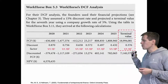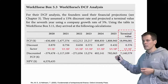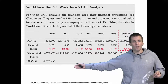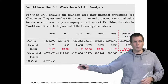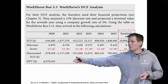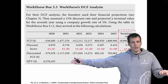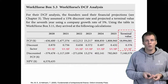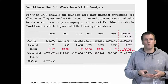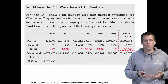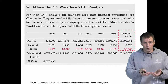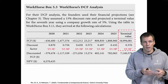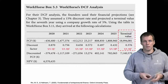We discount the terminal value, take the sum of all discounted values, and that gives us the net present value, or the valuation of the company. If we were to buy this company now, we would pay about six and a half million for it. So this is one way to calculate valuation: you do cash flow predictions, where free cash flow is the amount of money the company could return to investors, then discount those to current values and sum them up.